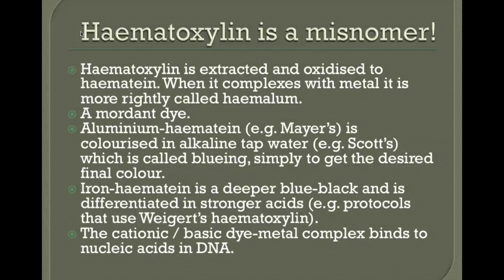Hematoxylin is a mordant dye that binds to a variety of metals. The most widely used are aluminium in Mayer's hematoxylin and iron in Weigert's hematoxylin, giving slightly different colours. Mayer's gives a brighter purpley-blue, which can be intensified by bluing in an alkaline solution like Scott's tap water. Weigert's gives a deeper bluey-black and is differentiated in acid to give the desired colour.